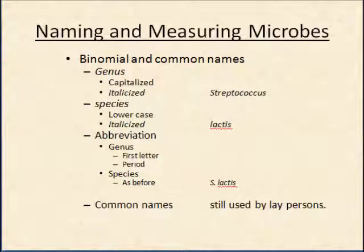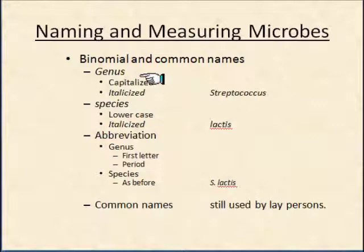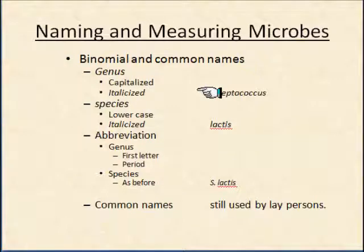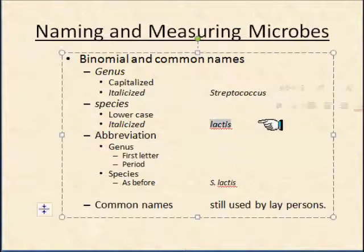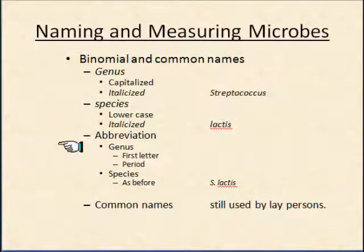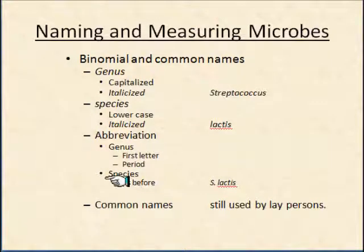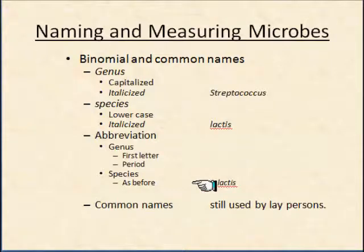If we go with this binomial naming system, there are some conventions on how we would write this. First, the genus is capitalized and italicized. So if we're talking about Streptococcus, it would look like that. The species is in lowercase but also italicized. Then we have abbreviations, in which case we use the first letter capitalized with a period after it for the genus, and then the species name. So instead of Streptococcus lactis, we could just say S. lactis.